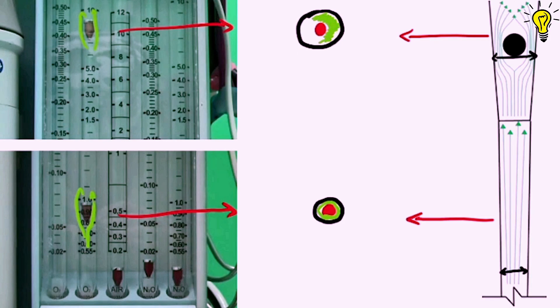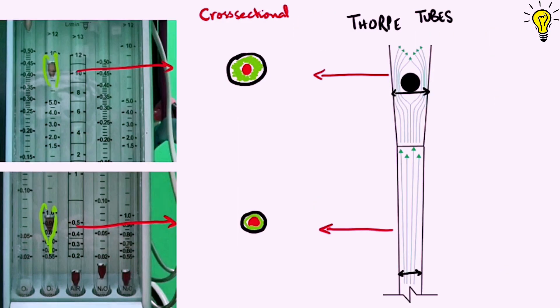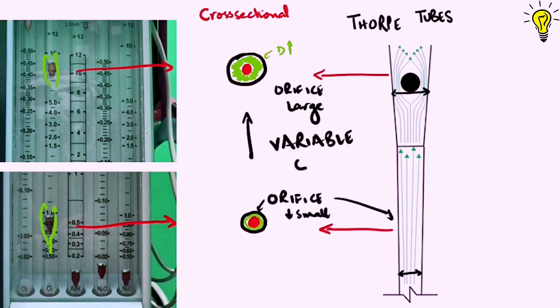And the orifice increases in the upper part, represented here in green area around the float. So since area of orifice in upper part is large, so less resistance and more flow can pass in upper parts. Since the orifice changes as we move up, it's called variable orifice. So now we know why they are called constant pressure variable orifice flow meters.